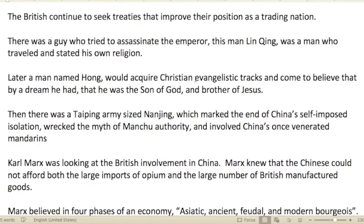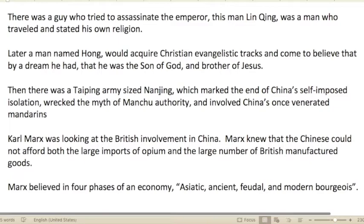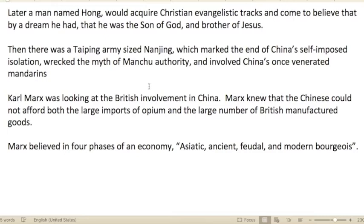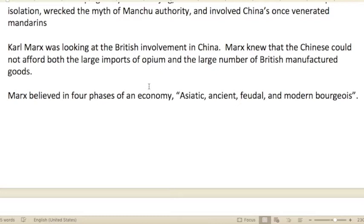Chapter eight: The Crisis Within. The British continued to seek treaties to improve their trading position. A man named Lin Qing tried to assassinate the emperor — he traveled widely and started his own religion. Later, a man named Hong acquired Christian evangelistic tracts and came to believe through a dream that he was the son of God and brother of Jesus. A Taiping army seized Nanjing, which marked the end of China's self-imposed isolation and wrecked the myth of Manchu authority.